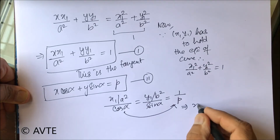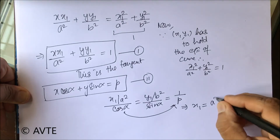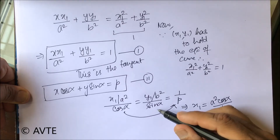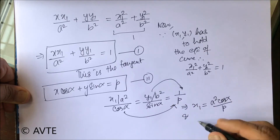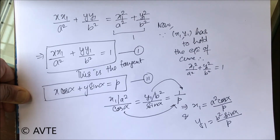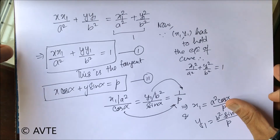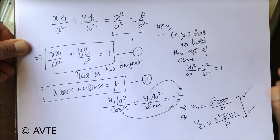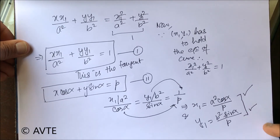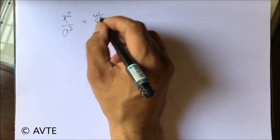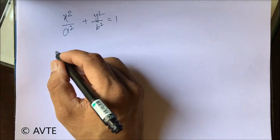If I take first with third, then we can relate that x1 is a square cos alpha by p. And same way if we take the second and connect it with third, then y1 is b square sine alpha by p. We can put that in the original equation. By putting these two components — the x component and the y component — in the original equation, we get the result.